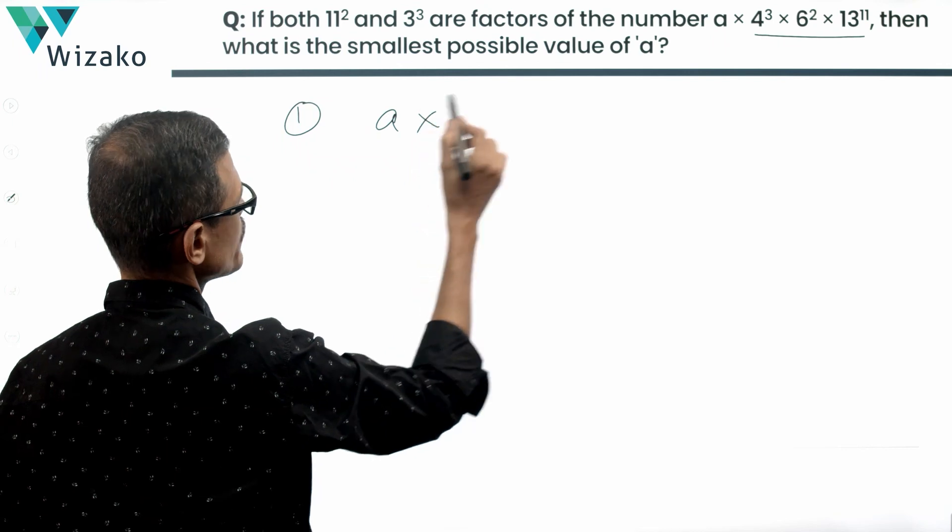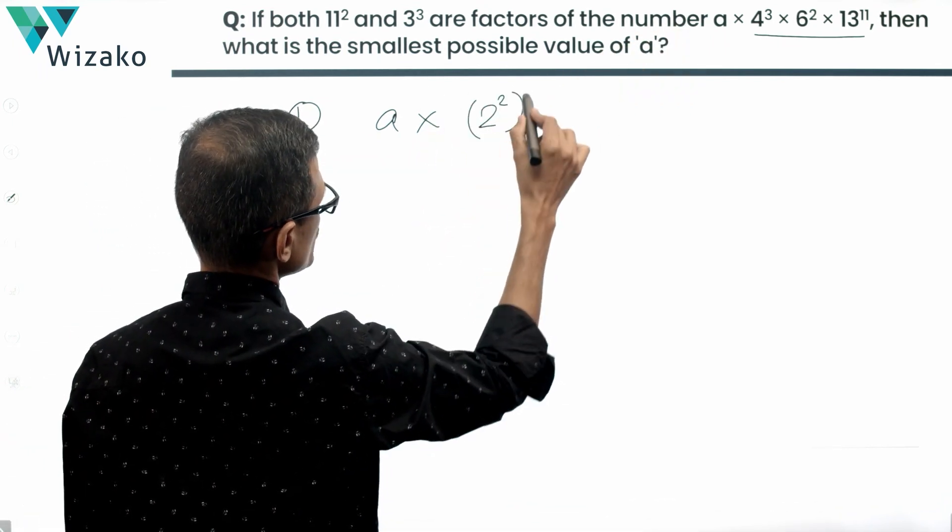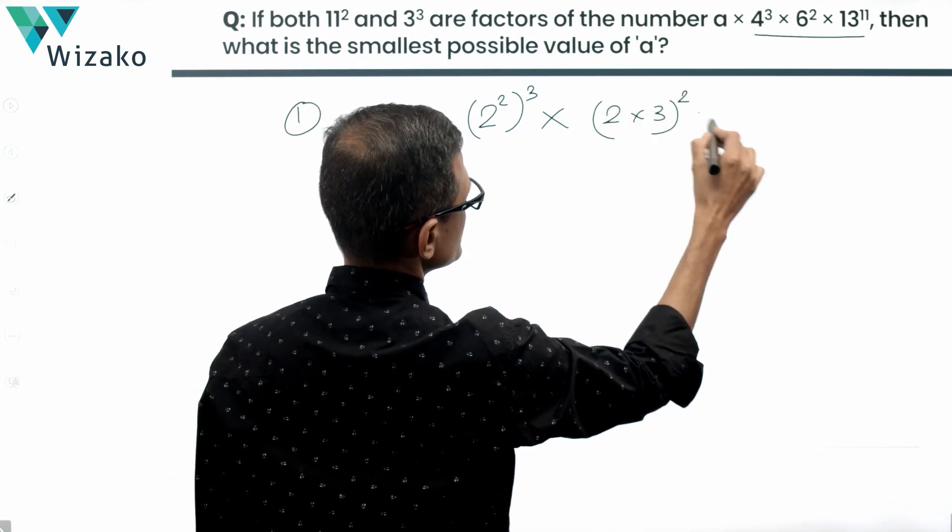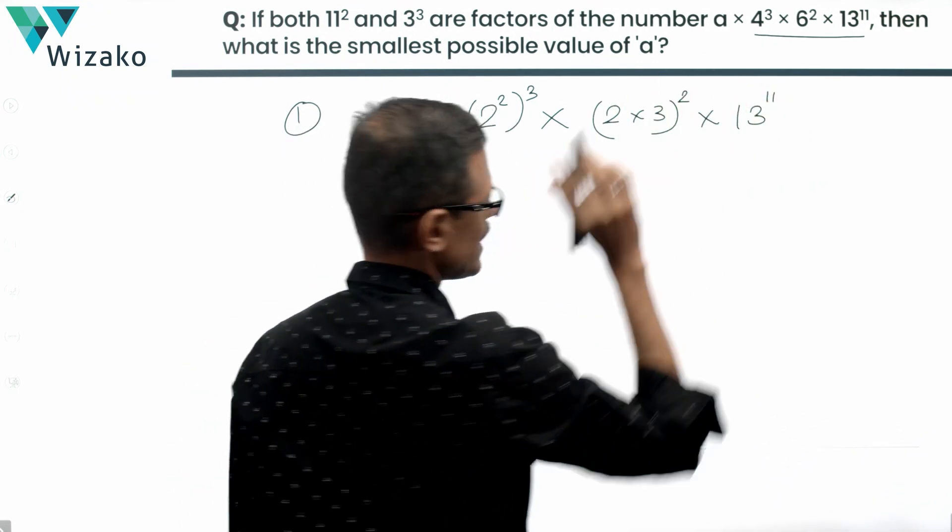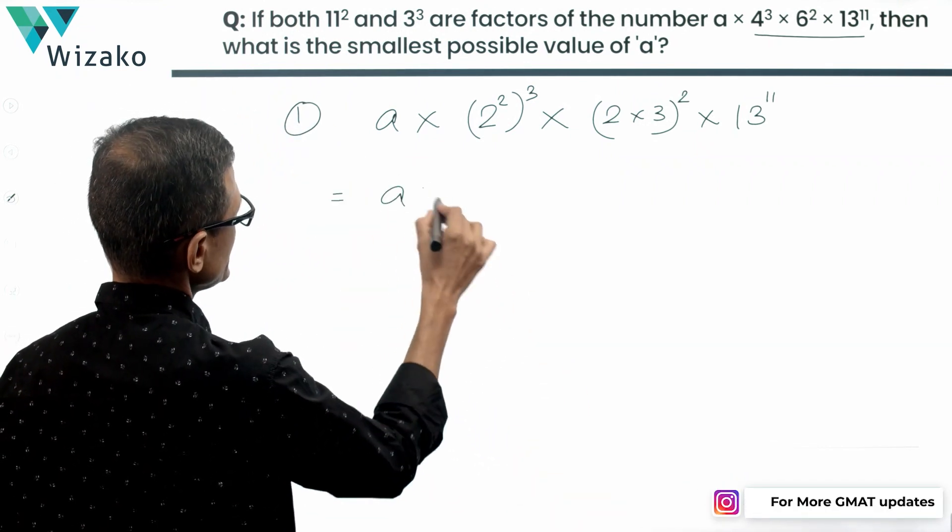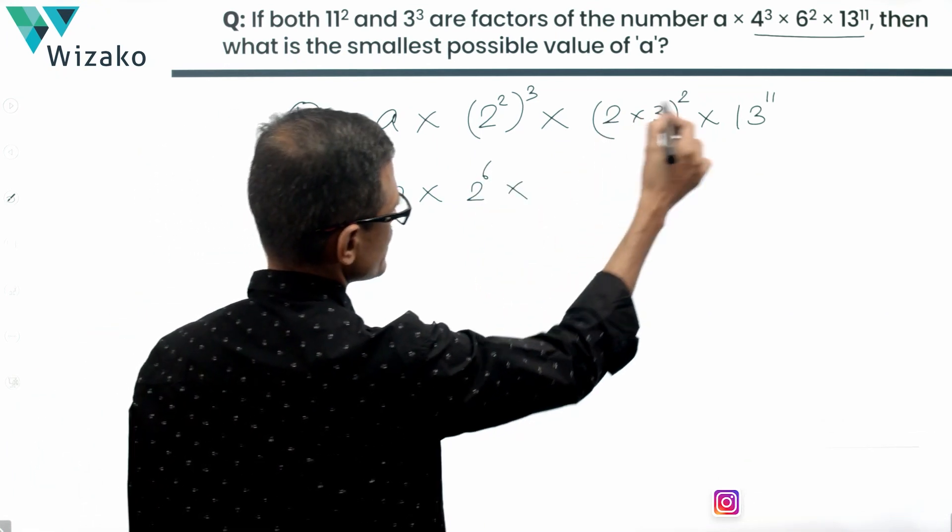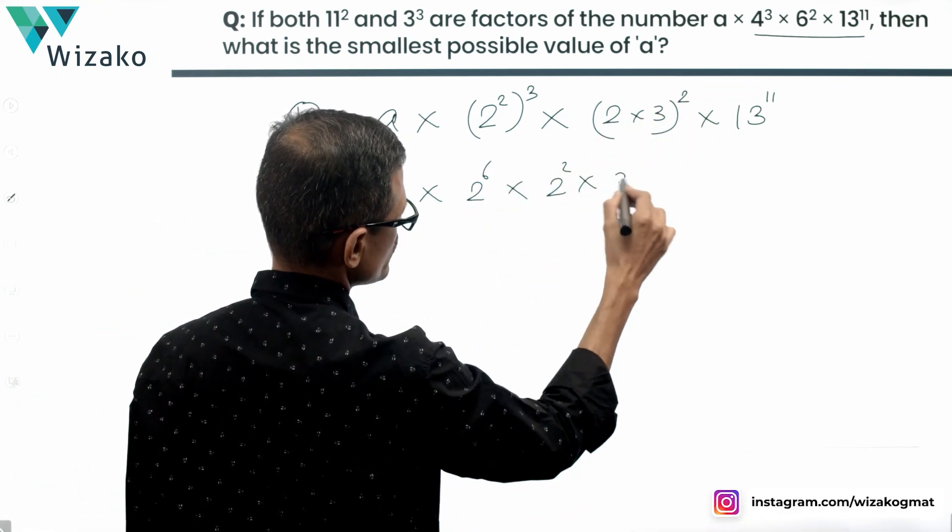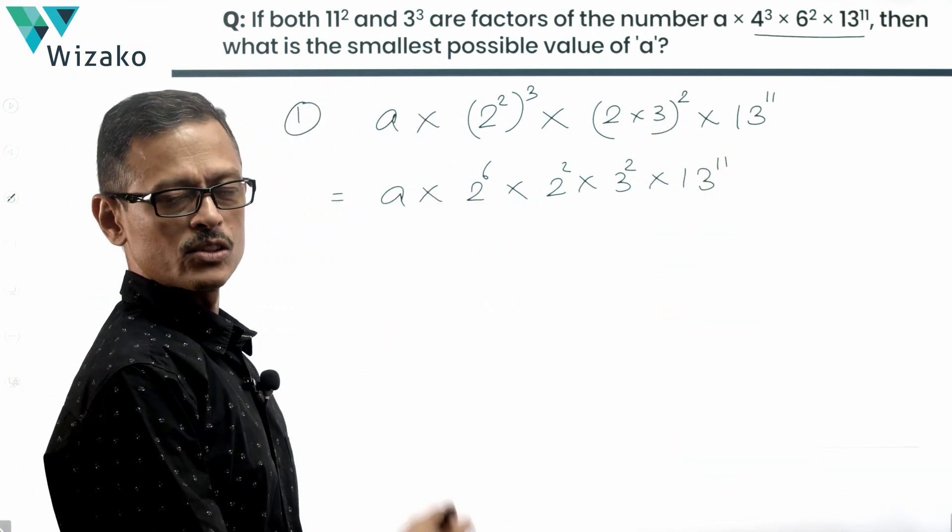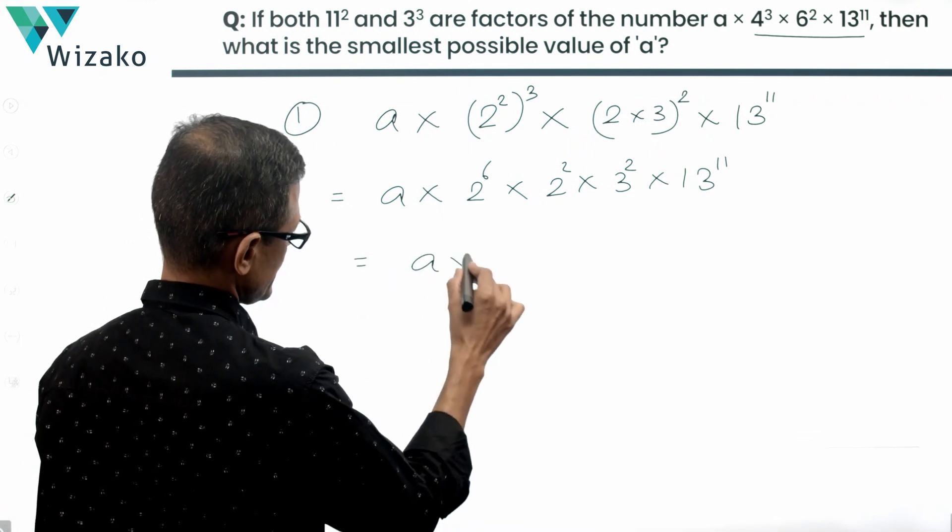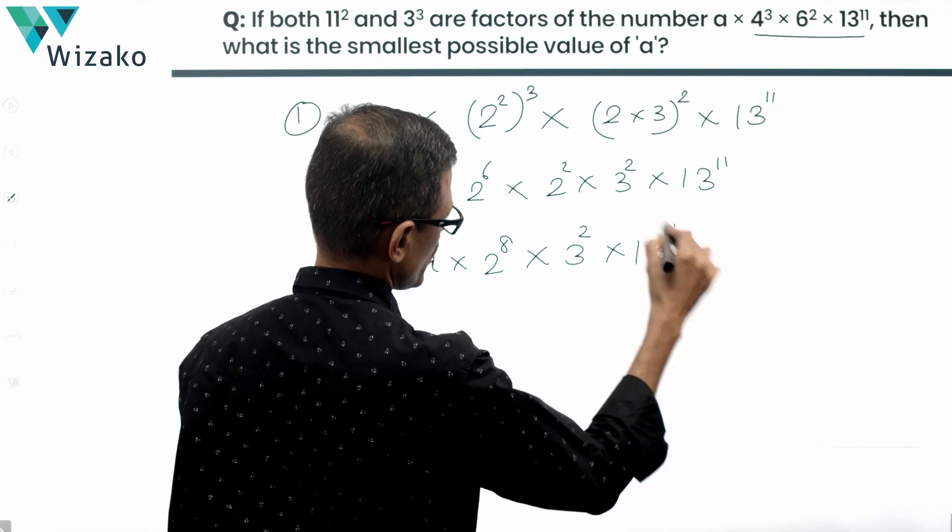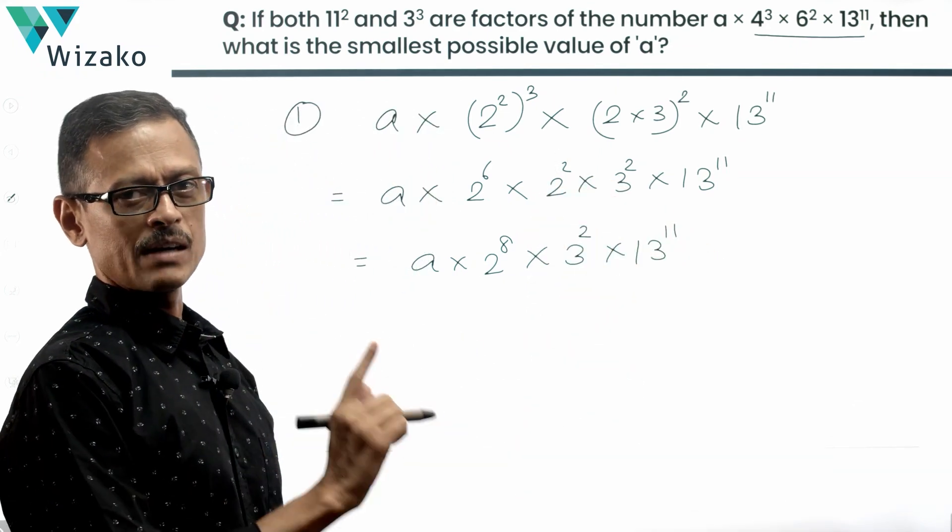So it's going to be A times 4 cube can be written as 2 square raised to the power of 3, and 6 square can be written as 2 times 3 the whole square. 13 is a prime number, so let's leave it as it is. So this is step 1. A into 2 raised to the power of 6 times 2 square times 3 square times 13 raised to the power of 11. Club these 2 square and 2 power 6 together. So we'll get A times 2 raised to the power of 8 times 3 square times 13 raised to the power of 11. So this is the number that's given to us.